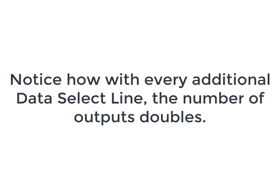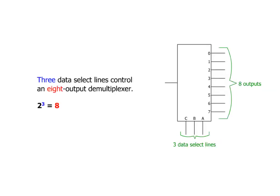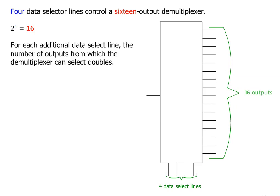Notice how with every additional data select line, the number of outputs doubles. With 2 data select lines, there are 4 outputs. 3 data select lines has 8 outputs, and 4 data select lines has 16 outputs.